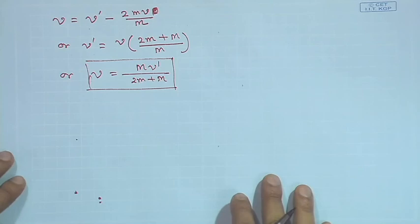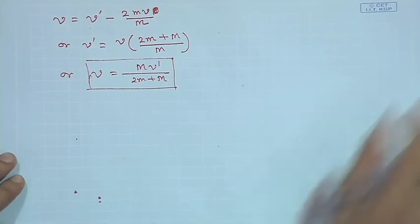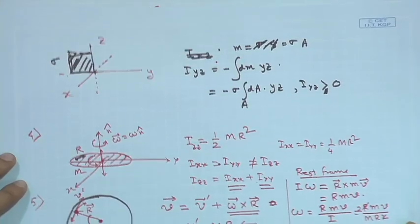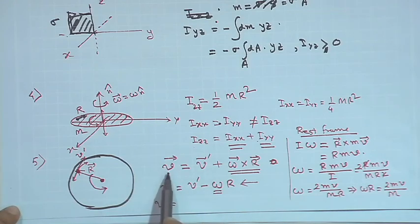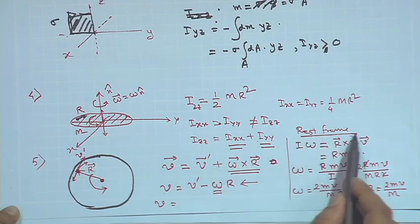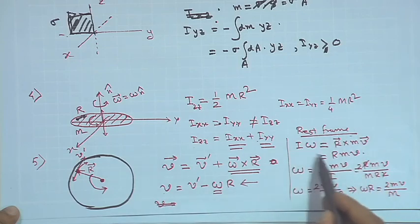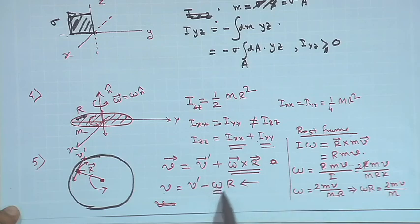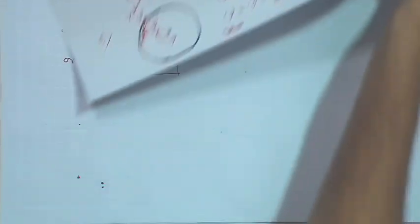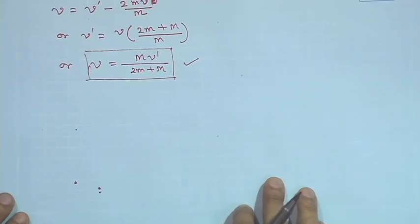So the final result is v = mv′/(2m + M). To recap: we wrote the velocity transformation between inertial and rotating frames, then applied conservation of angular momentum in the rest frame to find ω in terms of v, substituted back, and solved. In the next class, we will return to theory, define the ellipsoid of inertia, solve more problems, and move toward the final topics. Thank you.